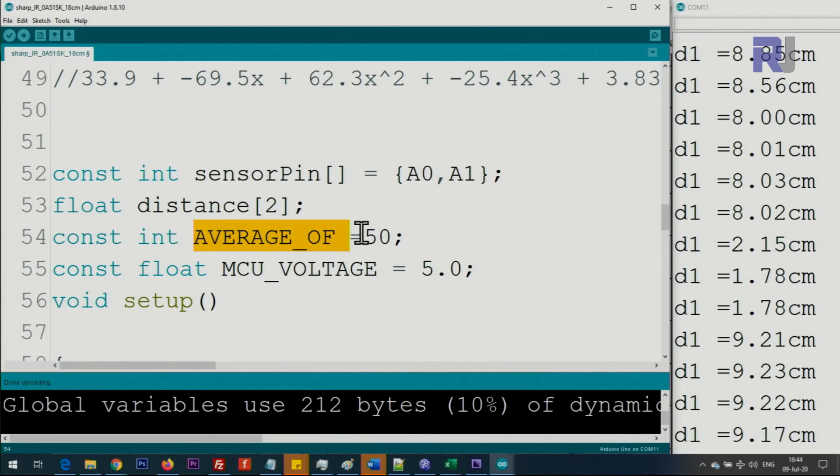This line is average of 50 measurements to get accurate values. This is the microcontroller voltage - if you're using Nano or other version that are 3.3 volts, please enter here 3.3 volts. Because I'm using Arduino UNO which is 5 volts, I put 5 volts.